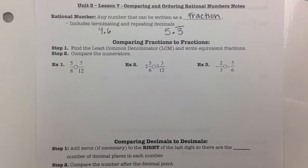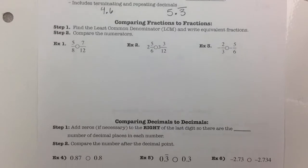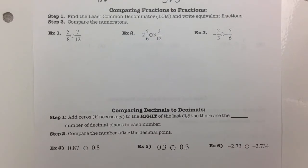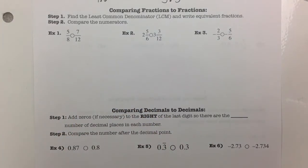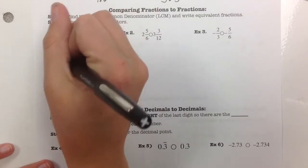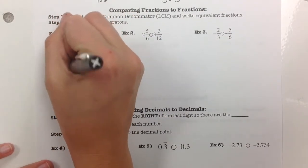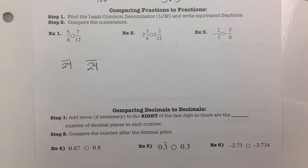First, let's look at comparing fractions to fractions. When comparing fractions in the same unit, I'm going to find that least common denominator — that least common multiple — and write equivalent fractions. Here I've got 8 and 12. Their least common multiple, which I can find using a multiplication chart, is 24. So I'm going to rewrite these with a denominator of 24.